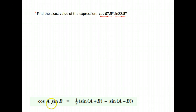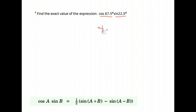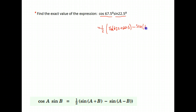We want the exact value of cosine 67.5 degrees times sine 22.5 degrees. We could plug that into our calculator and get an answer, but it wouldn't be the exact value. So we need to use angles that we do have an exact value for. When you have the cosine of an angle times the sine of an angle, it's equal to one-half times sine of the first angle plus the second angle, minus sine of the first angle minus the second angle.